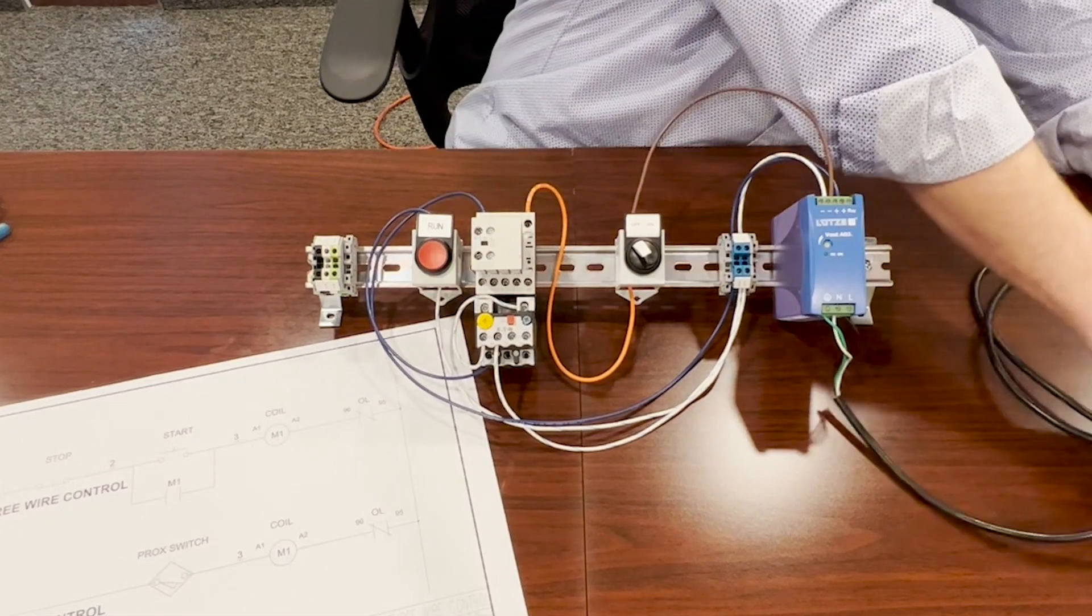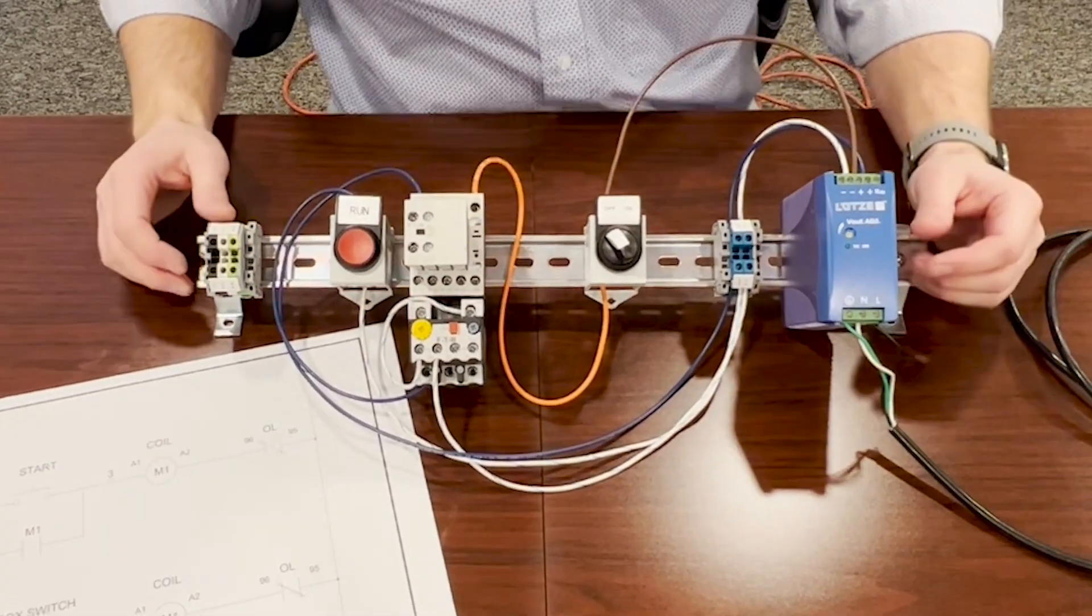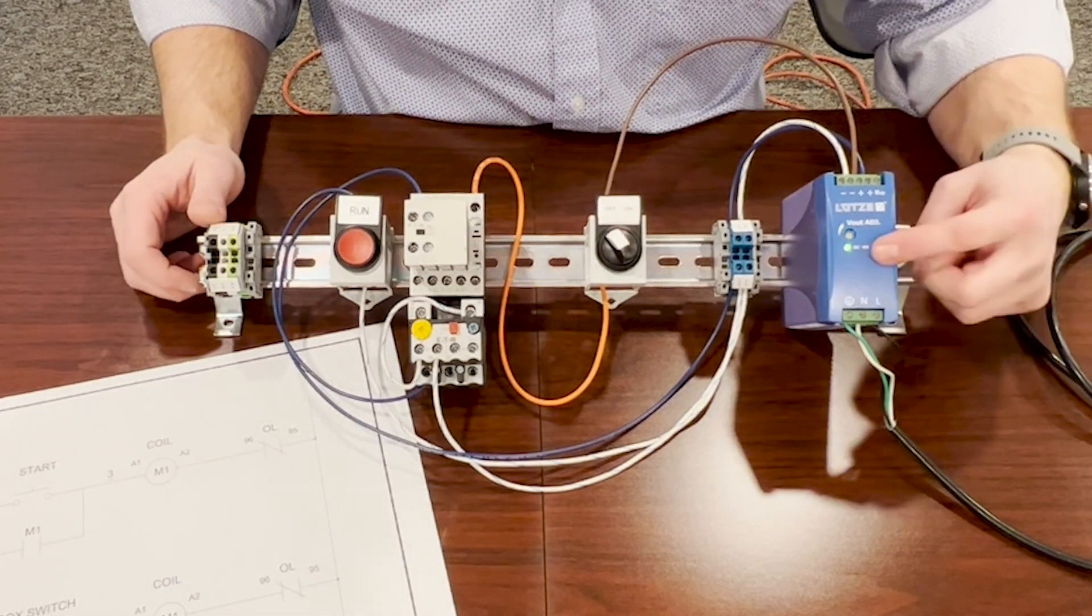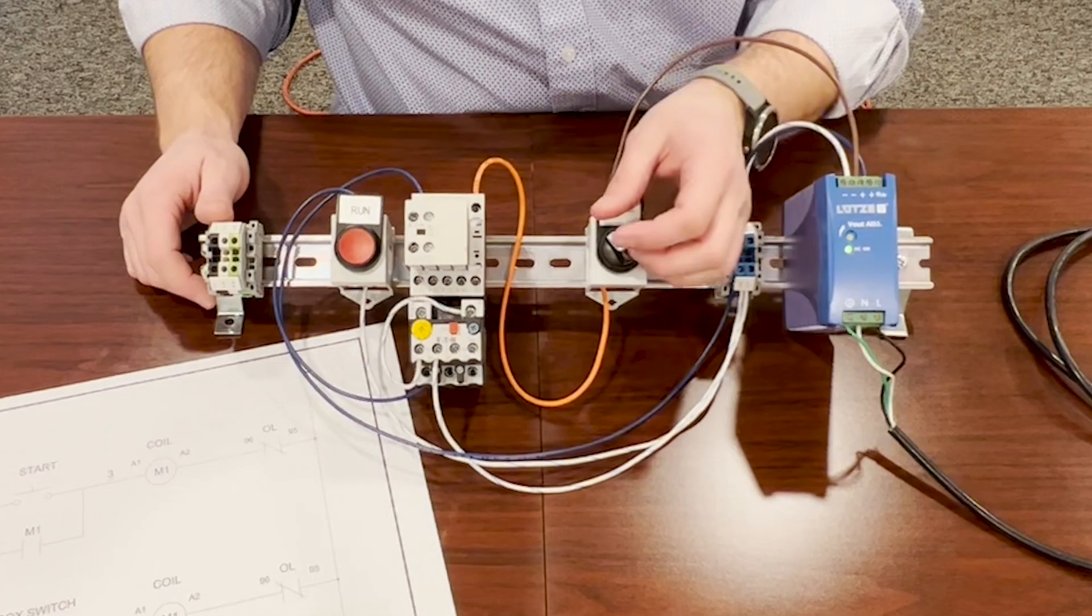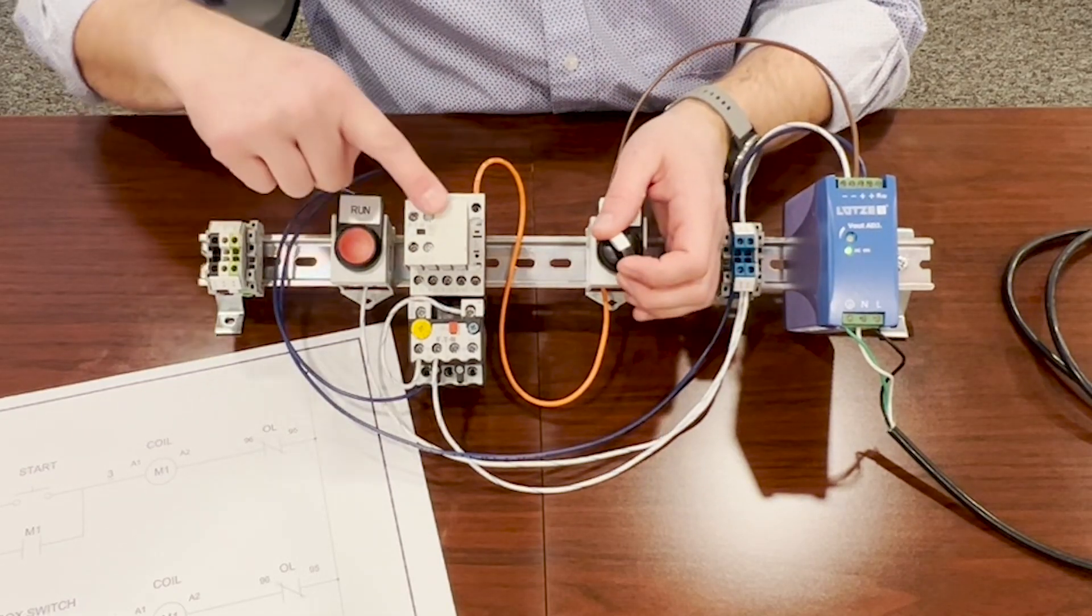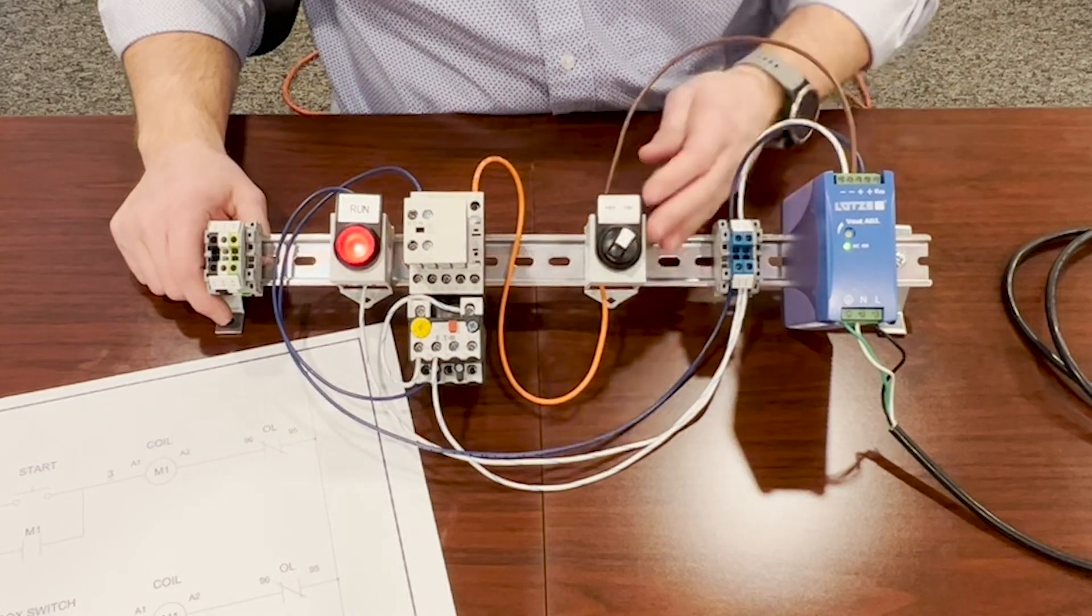So if we plug this in, 24 volts is on, power is going to our switch. When we turn this switch on, this is going to turn on, which is going to turn on our light. There it is.